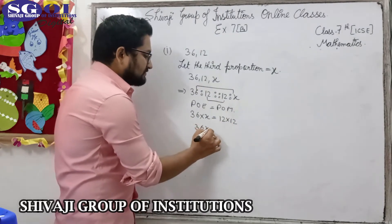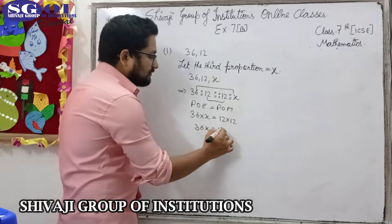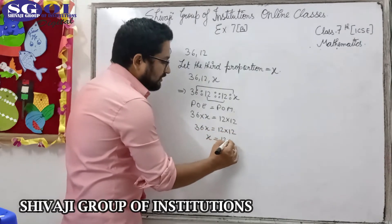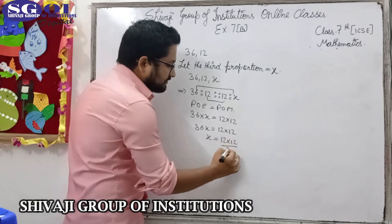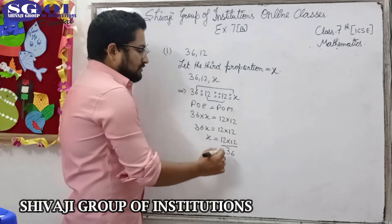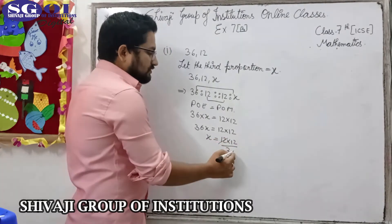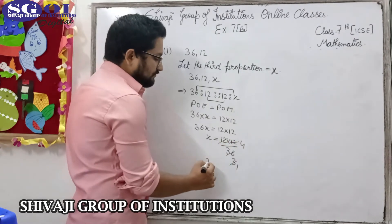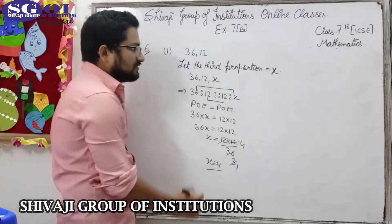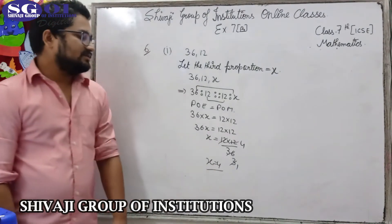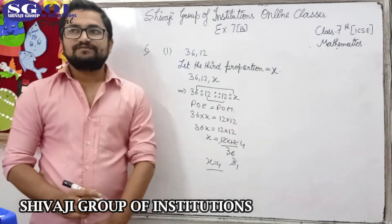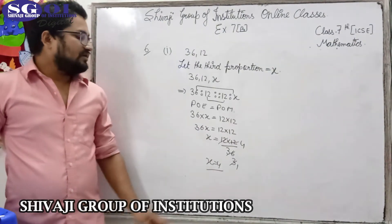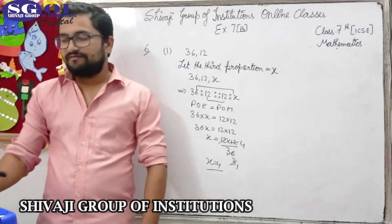So 36 × x is equal to 12 × 12. Therefore x is equal to 12 × 12 upon 36, which gives x equal to 4. So we can say that the third proportion to 36 and 12 is 4.